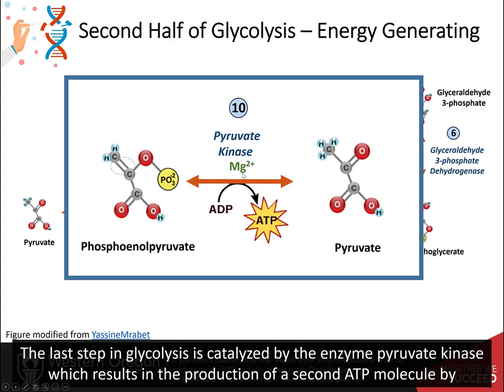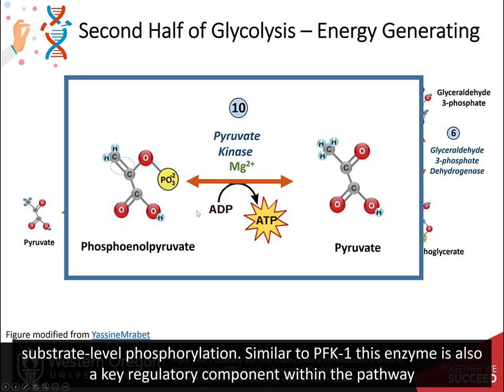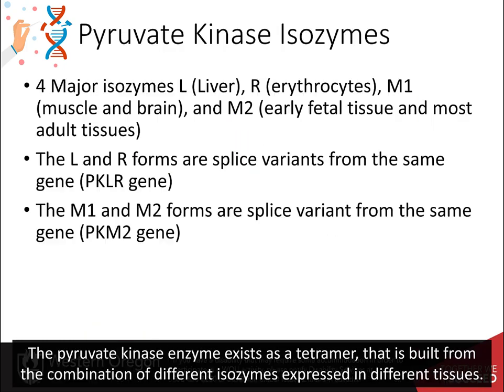The last step in glycolysis is catalyzed by the enzyme pyruvate kinase, which results in the production of a second ATP molecule by substrate-level phosphorylation. Similar to PFK1, this enzyme is also a key regulatory component within the pathway. The pyruvate kinase enzyme exists as a tetramer that is built from the combination of different isozymes expressed in different tissues.